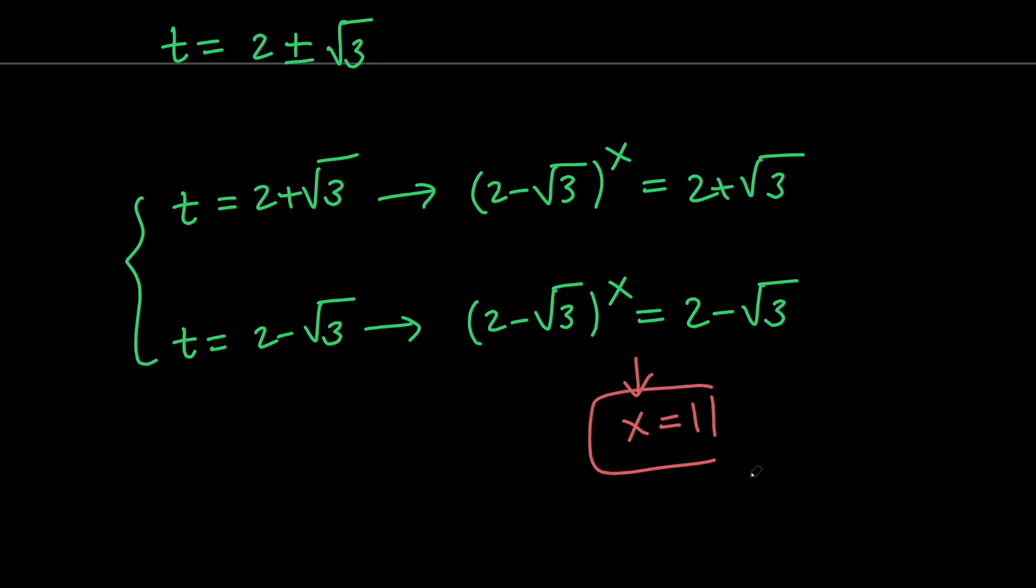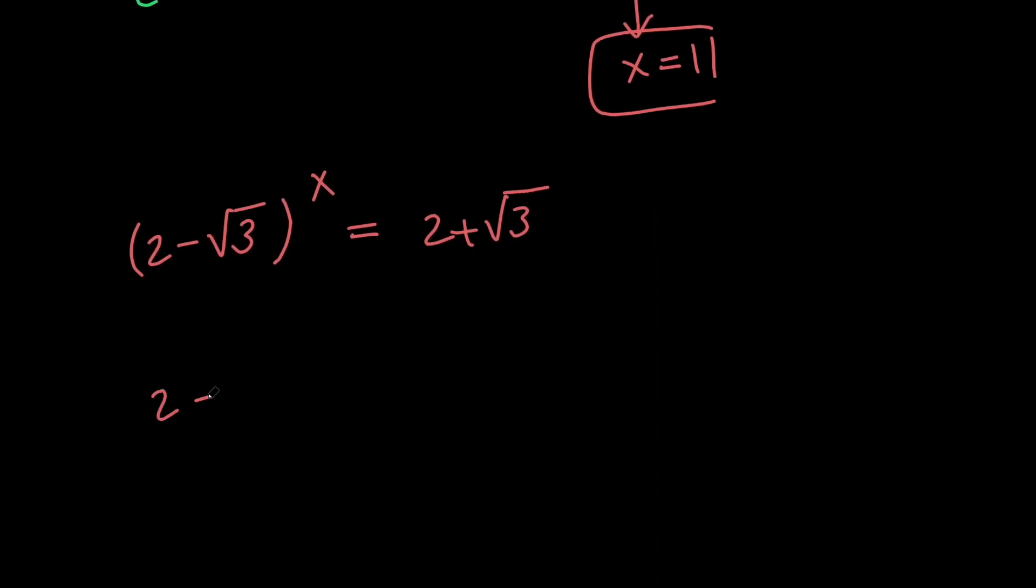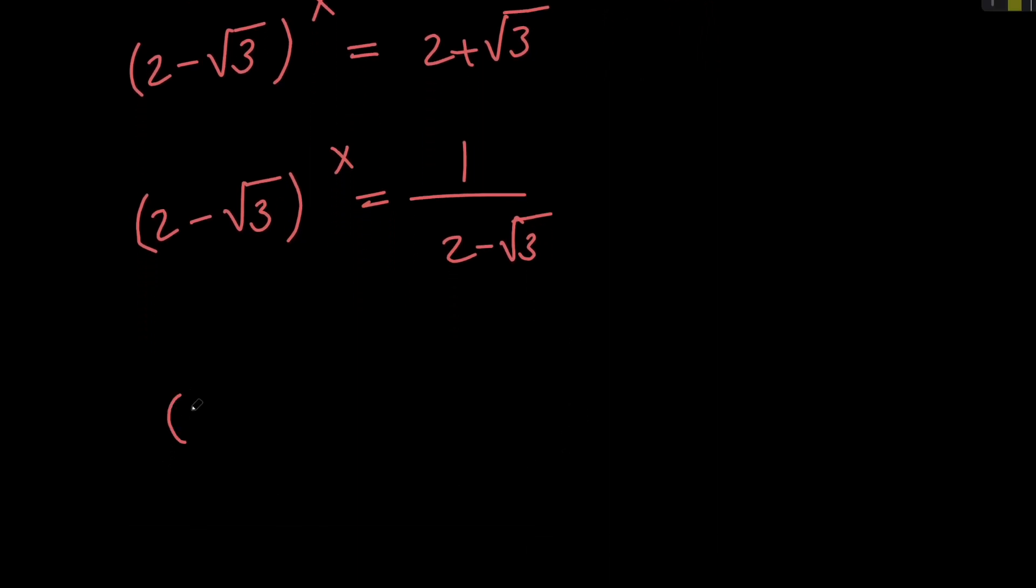But in the first one, we don't know the value of x. So let's go and solve that. So we have 2 minus root 3 to the x power equals 2 plus root 3. But remember that 2 plus root 3 and 2 minus root 3 are reciprocals. So I can go and say that 2 minus root 3 to the x power equals 1 over 2 minus root 3, right? And then if we cross multiply, we're going to get 2 minus root 3 to the power of x plus 1 equals 1.